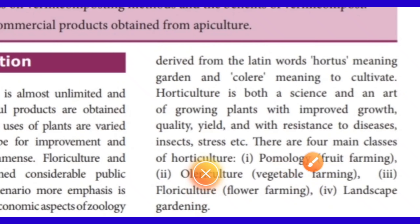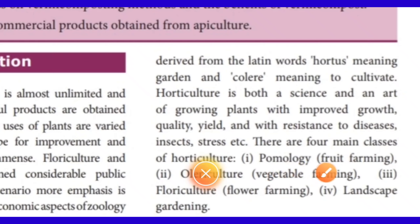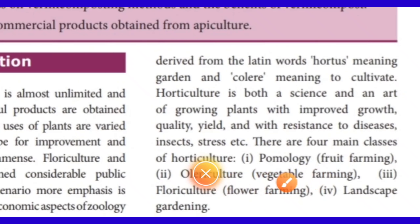There are four main classes of Horticulture. The first one is Pomology, which deals with fruit farming — how we cultivate fruits. The second one is Olericulture, which deals with vegetable farming — how we grow vegetables.